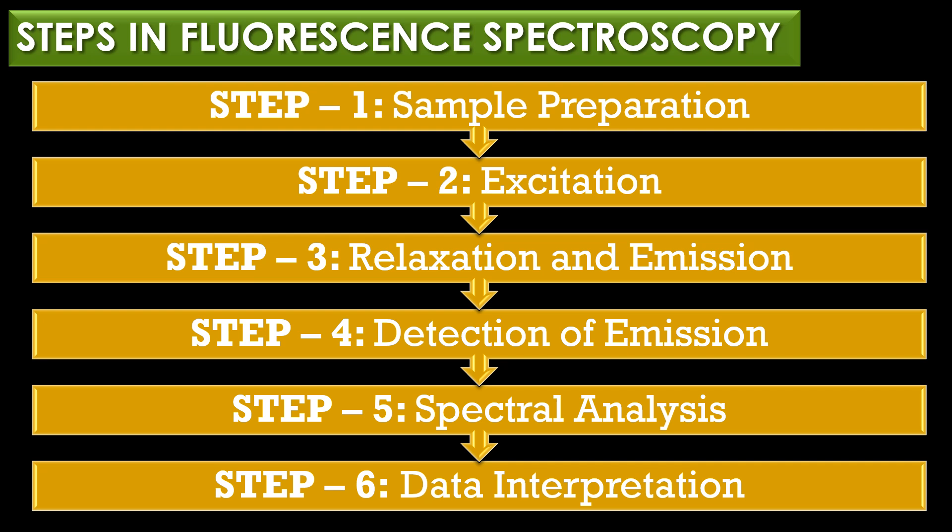The fifth step is spectral analysis. The wavelength and intensity of the emitted light are analyzed. An emission spectrum is generated by scanning across a range of wavelengths and measuring the fluorescence intensity at each point. This data provides insights into the concentration, environment, and dynamics of the fluorophore molecules.